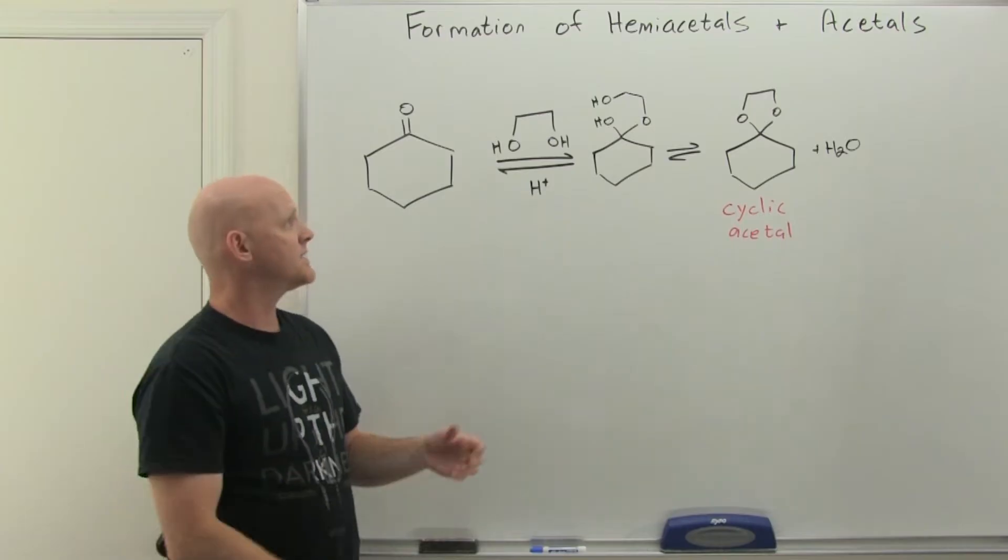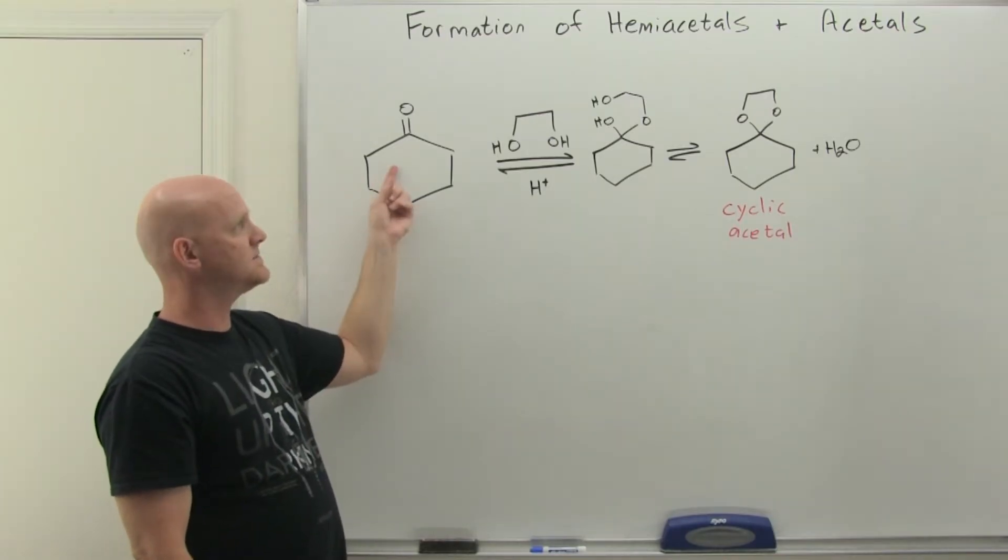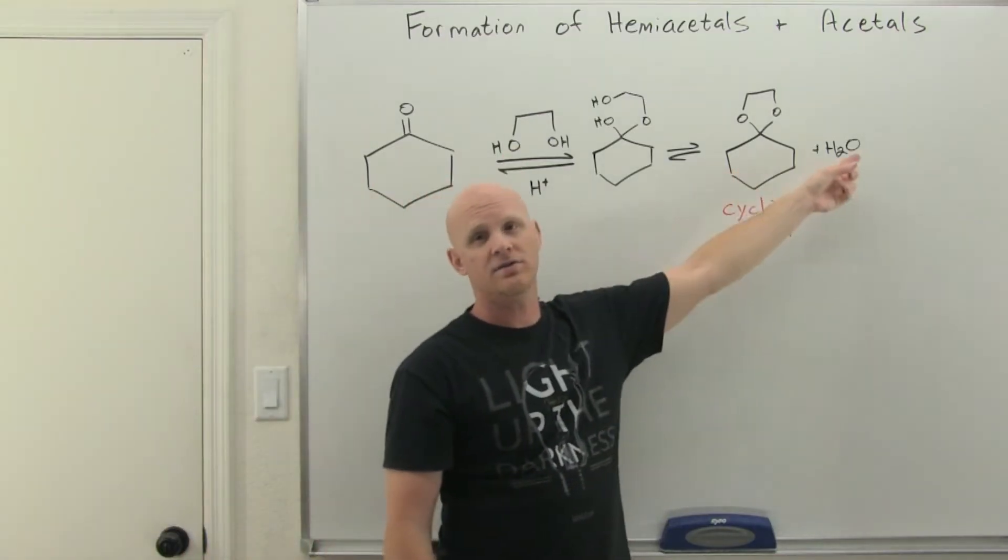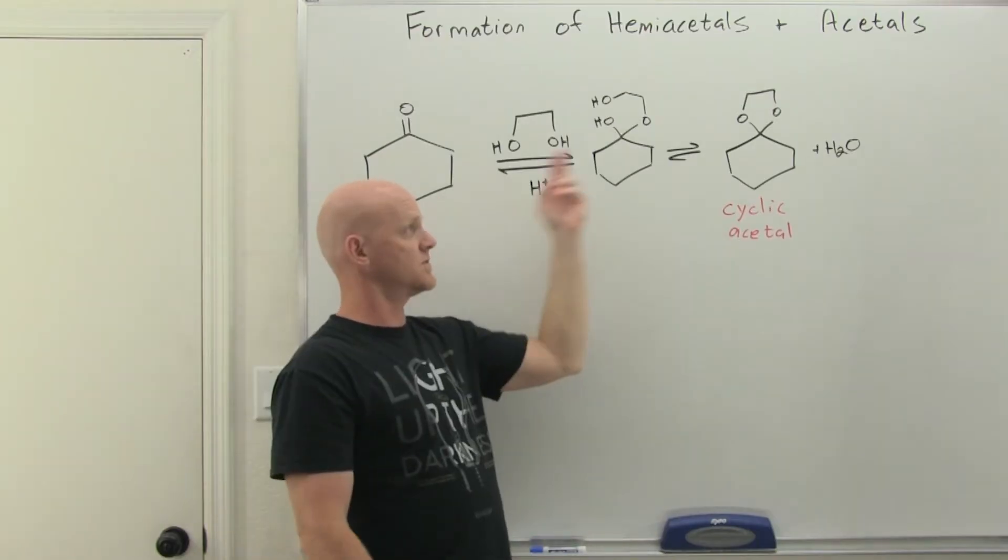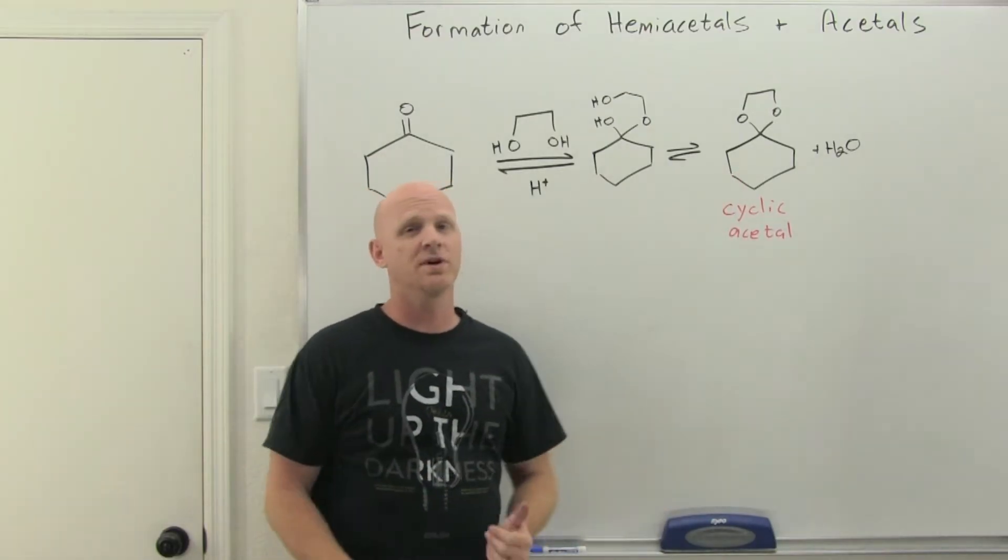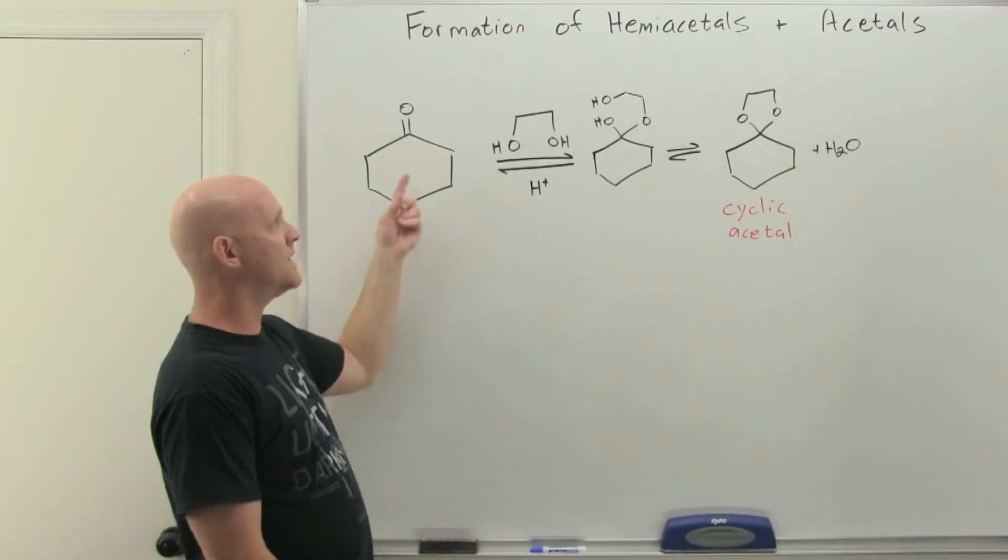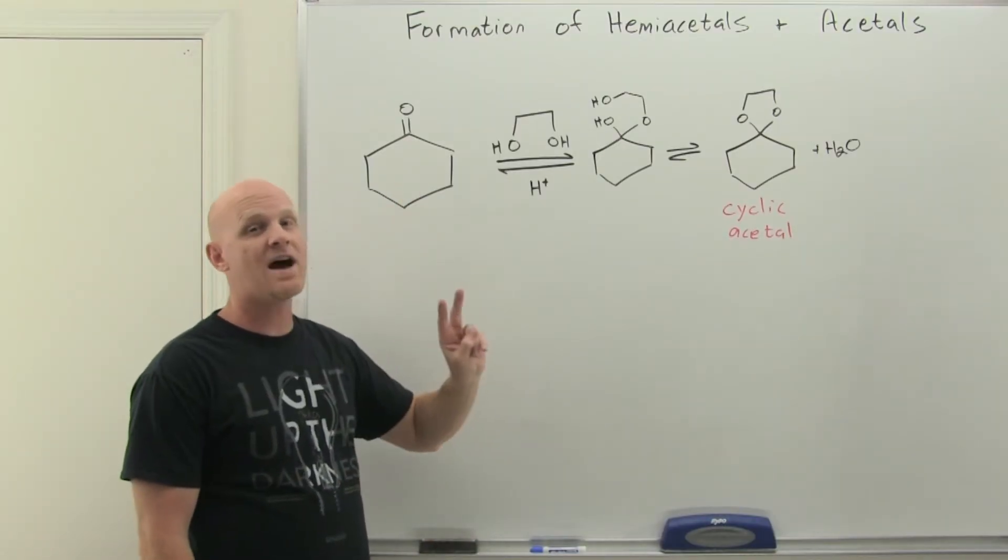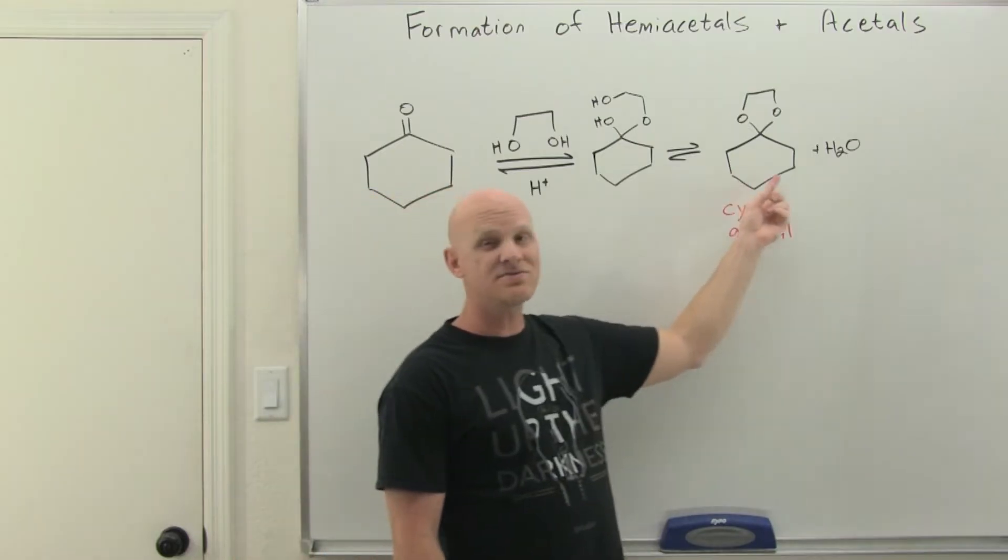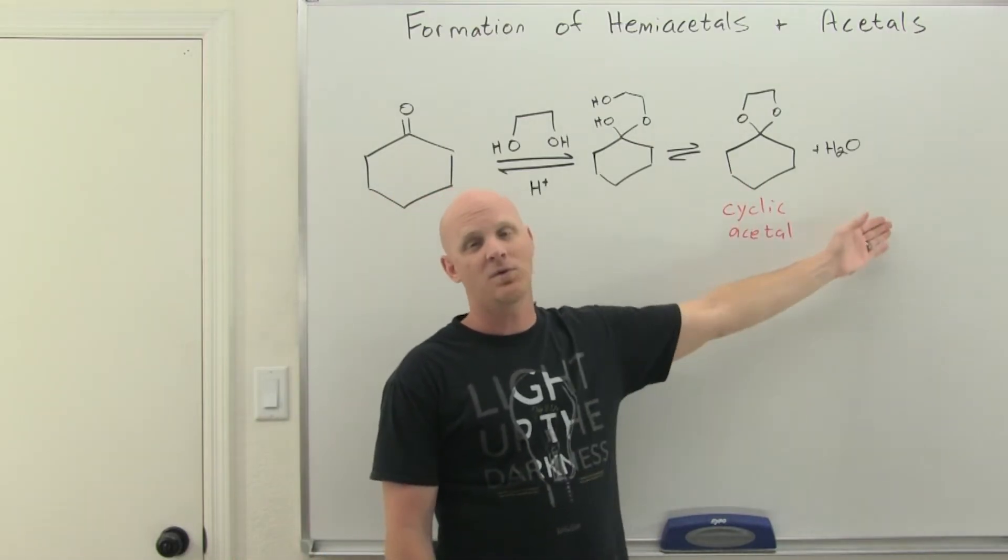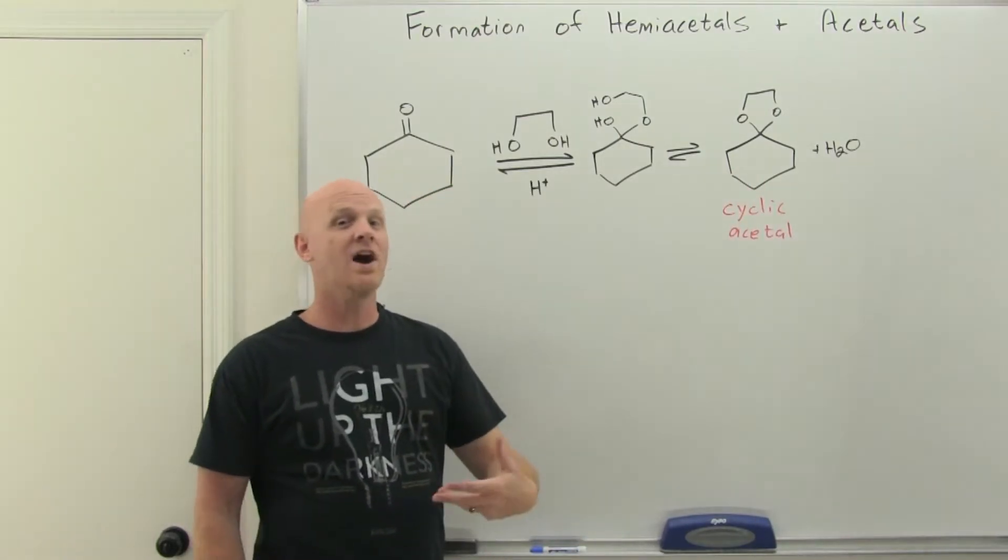But if you look at the number of reactants and products, so here we've got two reactants, the ketone and the diol, two products. And so from an entropy perspective, it's two versus two, it's entropy neutral. But when you did this before with just a regular alcohol, you'd actually have one ketone and then two equivalents of the alcohol, three reactants to just form two products, an acetal and water. And so it'd be entropically unfavorable.